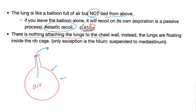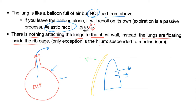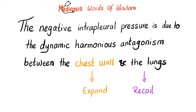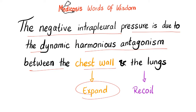There is nothing physically attaching the lungs to the chest wall — the lung floats inside the rib cage. If the lung tends to recoil inward and the chest wall tends to expand outward, two surfaces moving away from each other create a negative pressure between them that prevents separation. That's why intrapleural pressure is negative — it's the dynamic harmonious antagonism between the chest wall wanting to expand and the lungs tending to recoil.